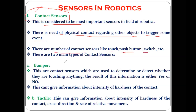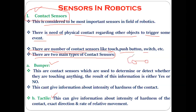There are different kinds of contact sensors: touch contact sensors, push button switches, and so on. Within contact sensors, there are two types: the bumper contact sensor and the tactile contact sensor. Another popular utilization of contact sensors is in cars.